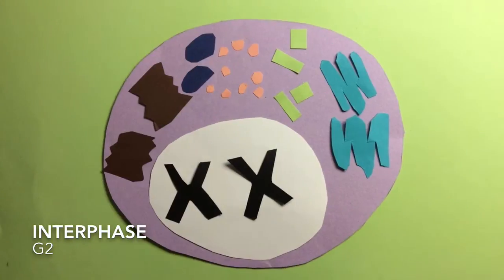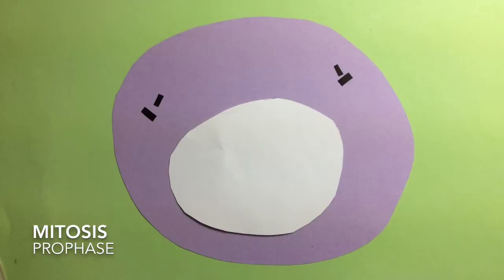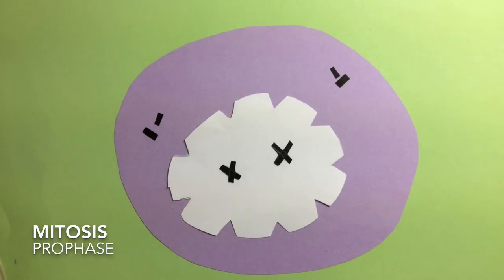In this phase, the cell starts making copies of its organelles. In prophase, the DNA condenses to form sister chromatids and the nuclear membrane breaks down.